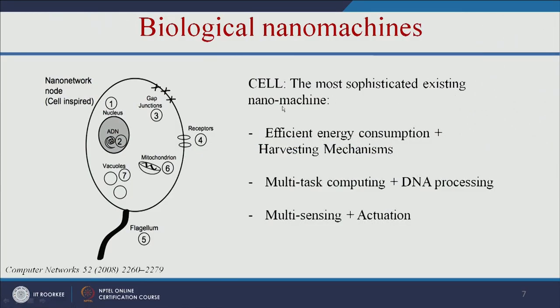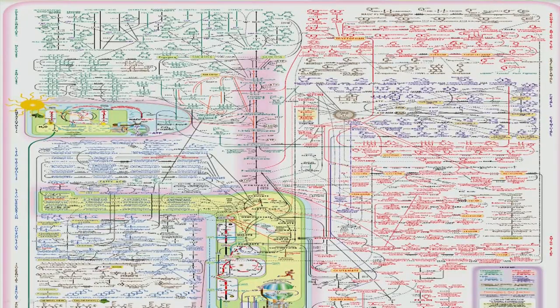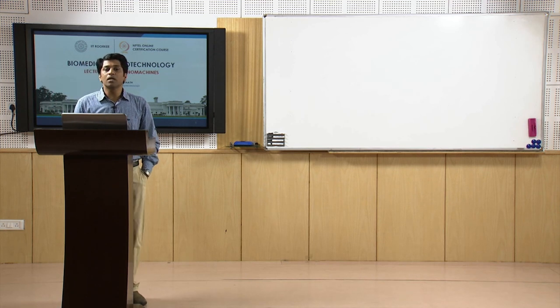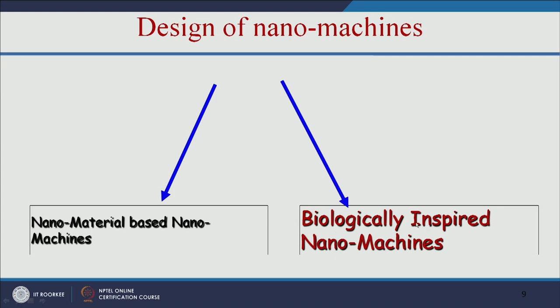The cell is the most sophisticated existing nanomachine — it has efficient energy consumption, multi-task computing, and multi-sensing capacity. We can easily take the idea from the cell and mimic nano-scale machines or nano-scale robots. This kind of complex metabolism is going on in your cell every millisecond or nanosecond without any disturbance or trafficking inside the cell. That is why we are taking the idea from nature to make biologically inspired nanomachines.